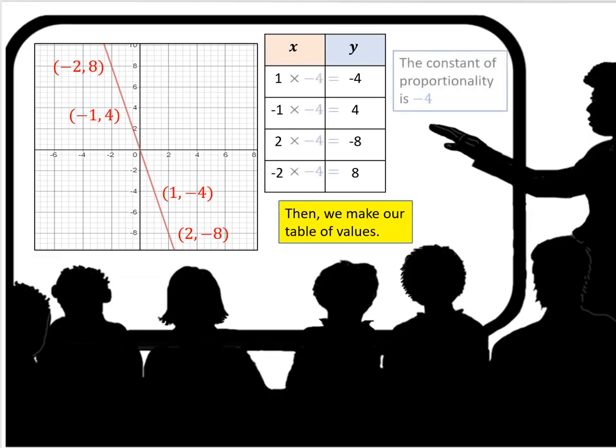And now we make our table. Now that we have a table of values, we can easily see that to go from 1 to negative 4, you have to multiply times negative 4. From negative 1 to 4, you have to multiply by negative 4.